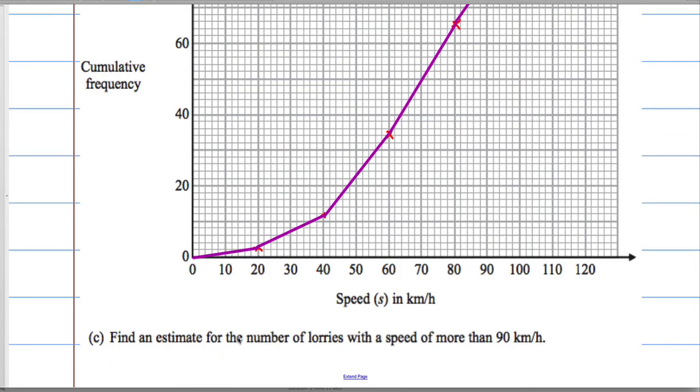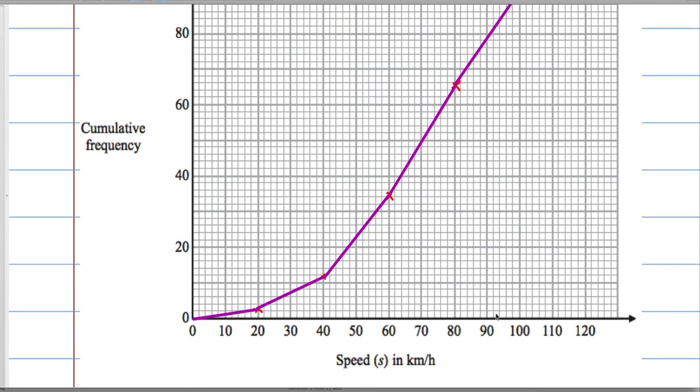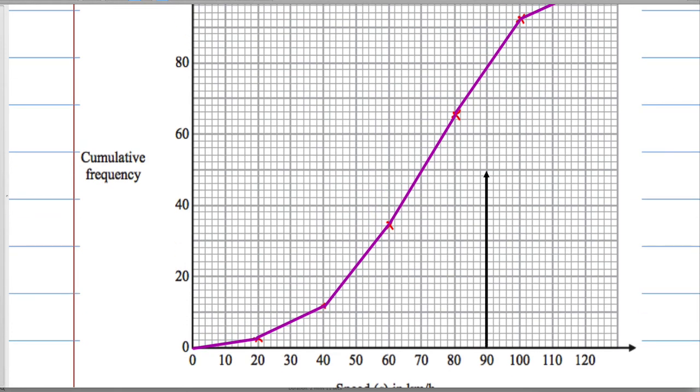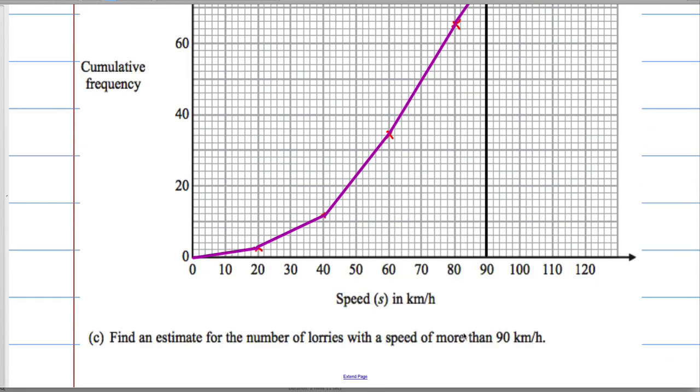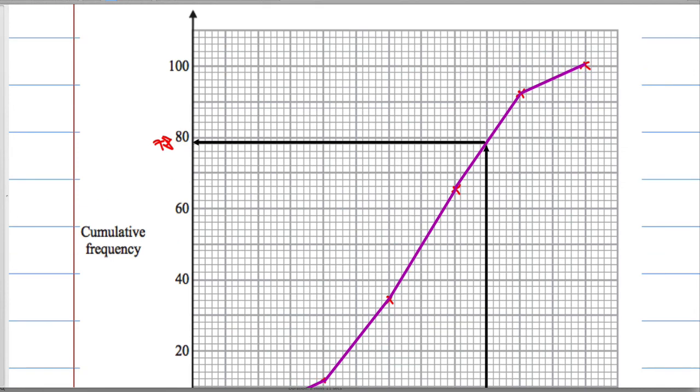The next part: find an estimate for the number of lorries with a speed of more than 90 kilometers. This is the speed of 90 kilometers. If I draw a line up to my graph, it hits here and read across. From the diagram, that's about 78 people roughly, at a speed of less than 90 kilometers.